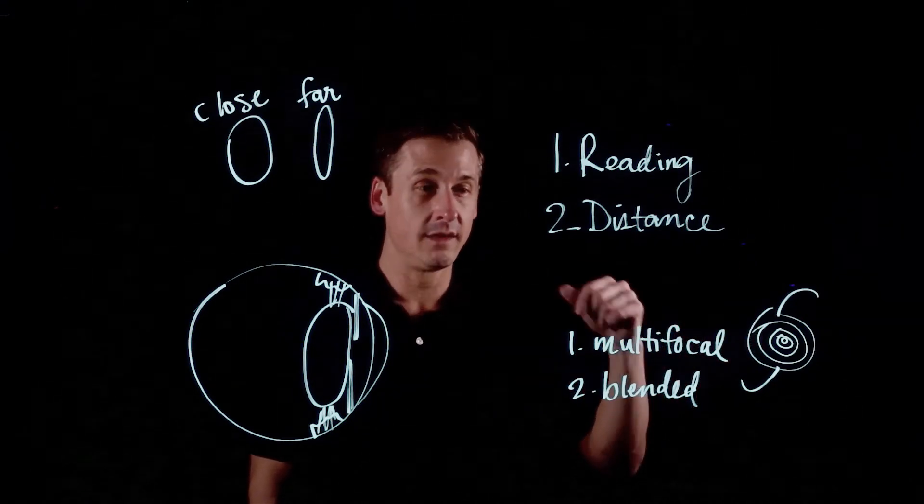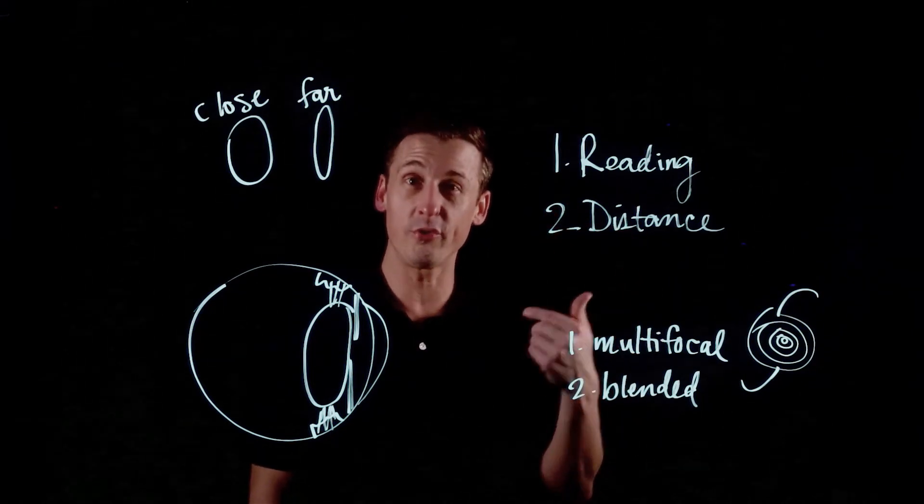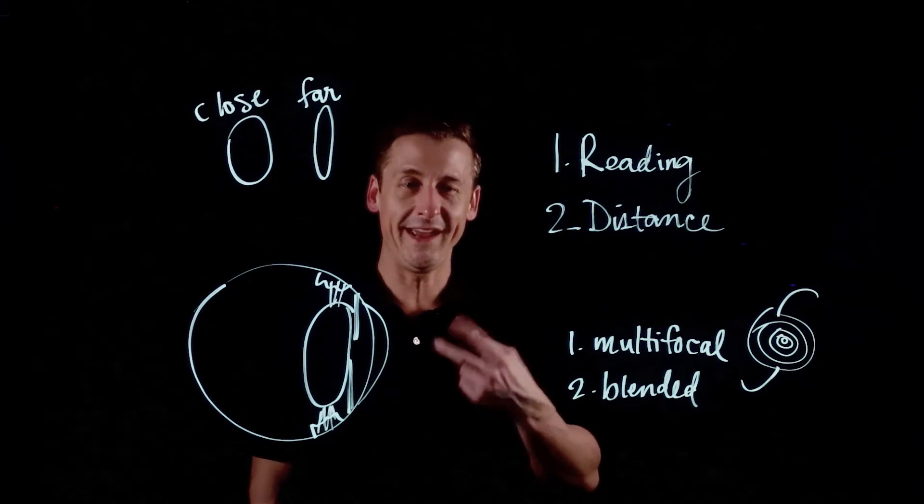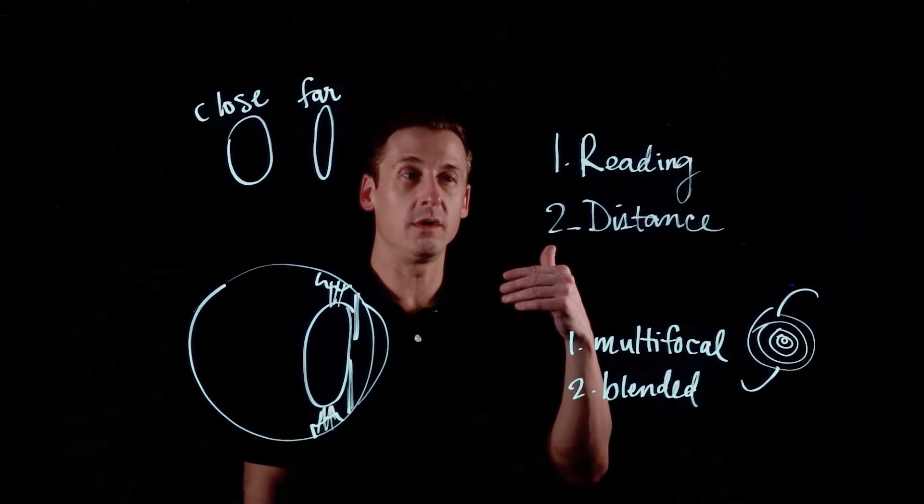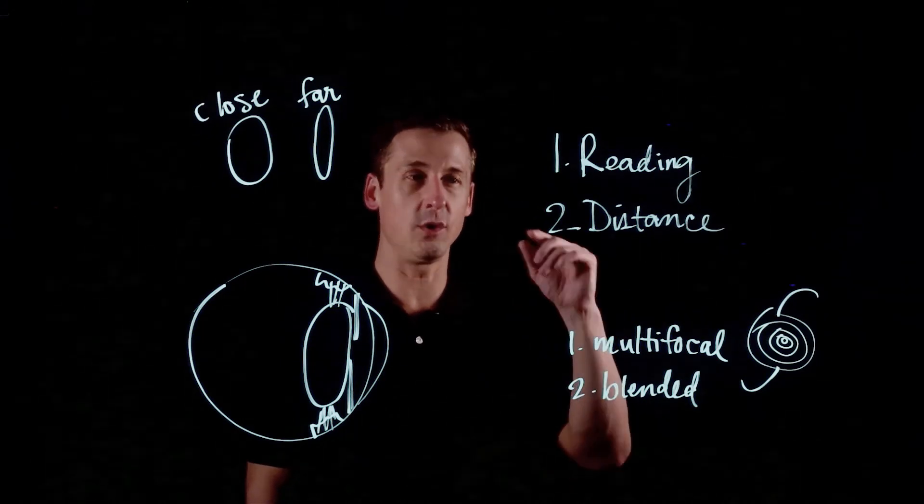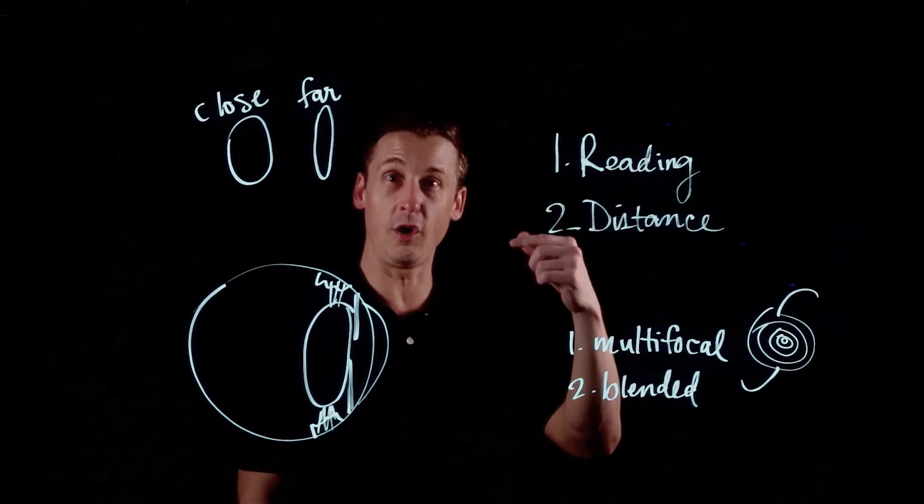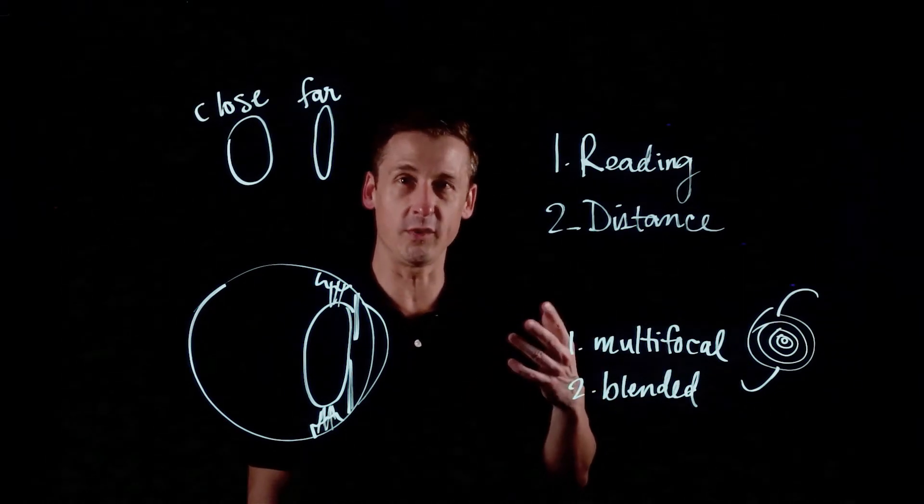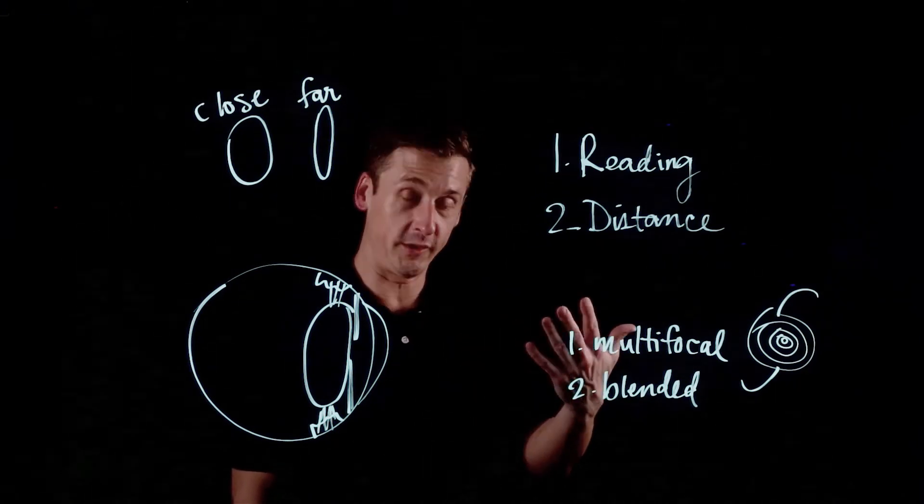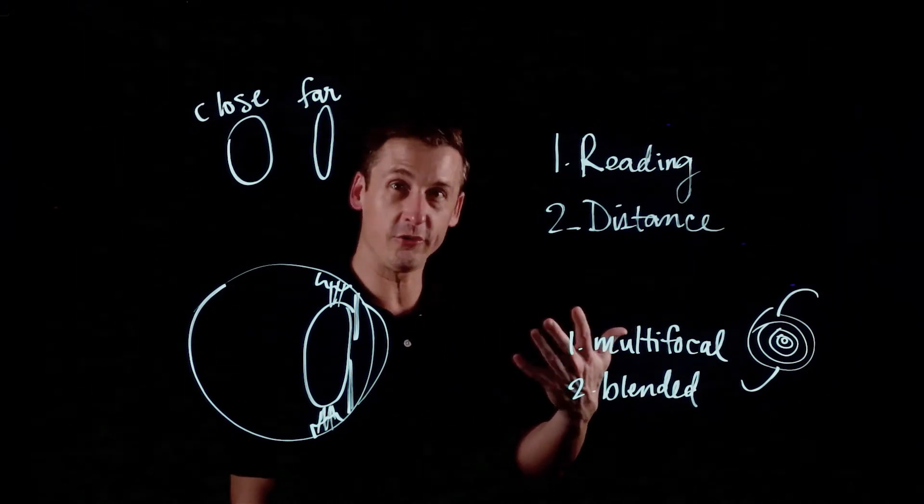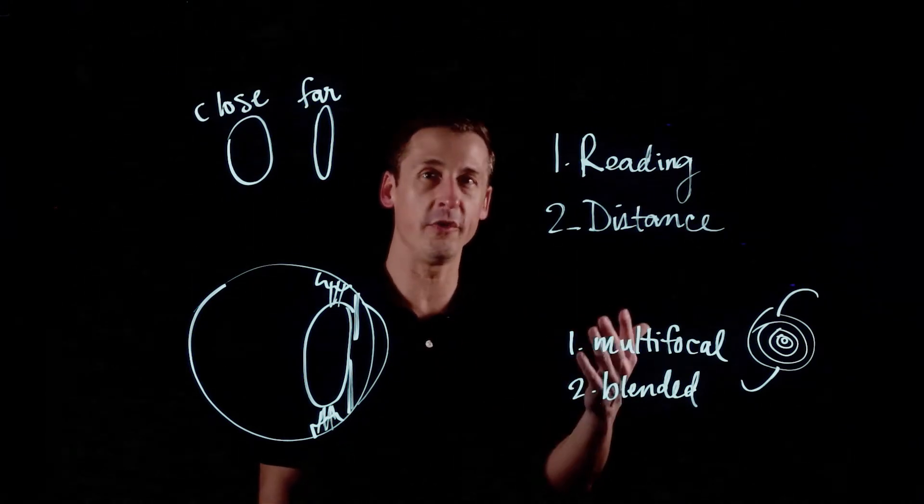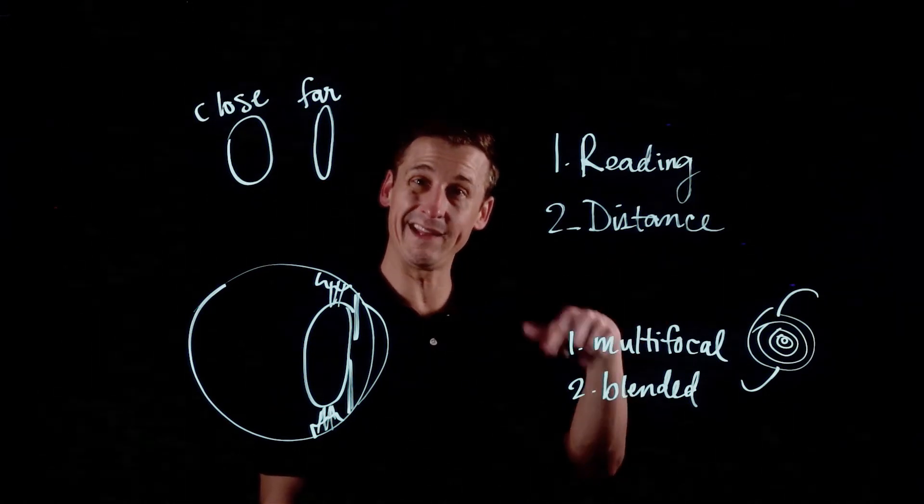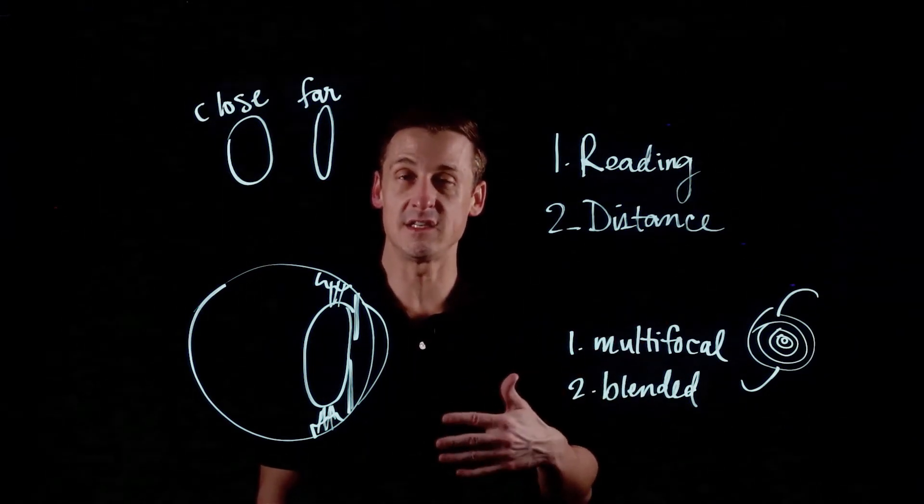The advantage to that is that both eyes are seeing distance and both eyes are seeing near. The disadvantage—there's two, and they have to do with each other. The first one is that you're always looking through both. So if you're looking at something down the road, you're also looking through the rings that are the near-focusing rings, and so that light is not as focused. If you're looking at something up close, you're looking through the close rings, but you're also looking through the distance part of the multifocal all the time. So it overall decreases the amount of contrast.